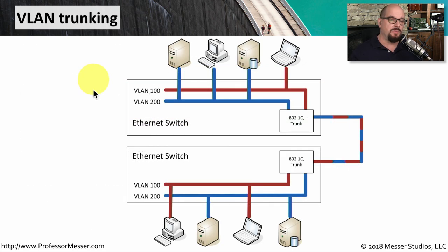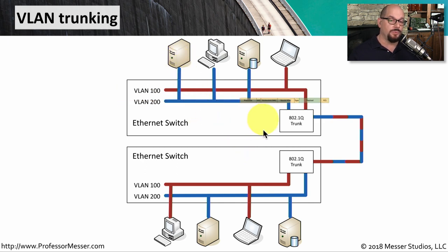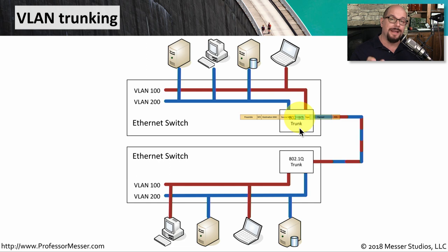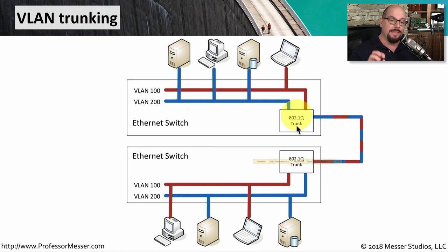Let's see how this trunking process might work. We'll start with an ethernet frame that's starting on a device on VLAN 200. This device needs to communicate with a device on the other ethernet switch, so that information is sent to the .1Q trunk interface. At that point, the frame has the VLAN information for VLAN 200 added into the frame and it's sent across the trunk. At the other side, that VLAN tag is taken out of the ethernet frame and it's put back onto the network and sent to the appropriate VLAN.